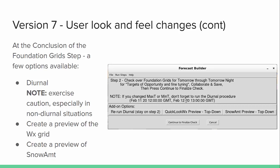At the conclusion of the foundation grid step, there are a few options available. The first is similar to previous versions: the option for diurnal. You should exercise caution, especially in non-diurnal situations, as diurnal can produce some odd artifacts. You also have an option to create a preview of the weather grid — in this case configured as top-down — and you can also create a preview of the snow amount grid. These two options of creating weather and snow amount as a preview are nice so that you don't have to go all the way through the process. Many offices had requested this type of feature.